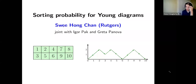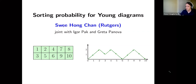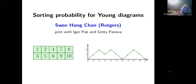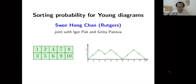Welcome everyone to another week of the Experimental Math Seminar here at Rutgers. This week our speaker is Professor Suihong Chen from Rutgers. He's going to talk to us about sorting probability for Young diagrams. Today's talk is a joint work with Iker Park from UCLA, who is also in the audience, and with Greta Panova from USC.